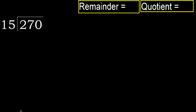270 divided by 15. 2 is less, therefore next. 27 is not less, therefore we work with 27.